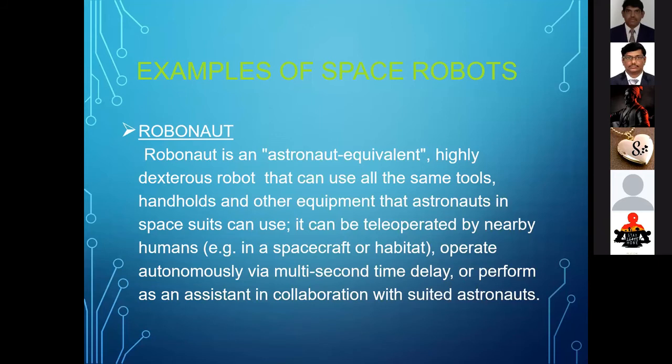Some examples of robots already in space: Robonaut is an astronaut-equivalent, highly dexterous robot that can use all the same tools, hand loops, and other equipment that astronauts in space suits can use. It is teleoperated by nearby humans and can operate automatically despite multi-second time delays, or perform in collaboration with suited astronauts.